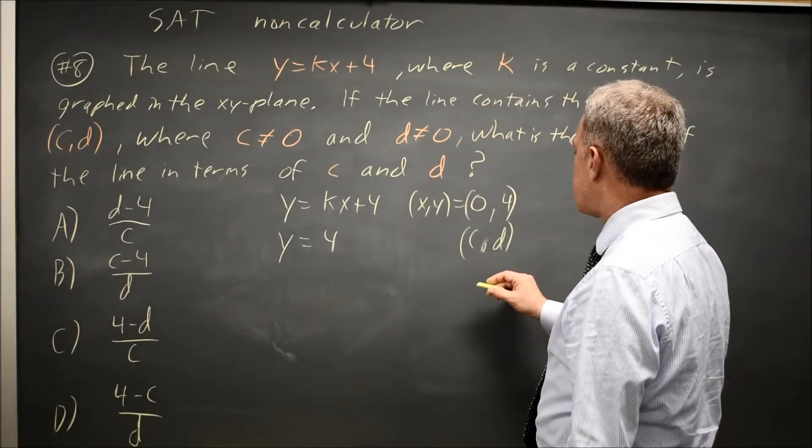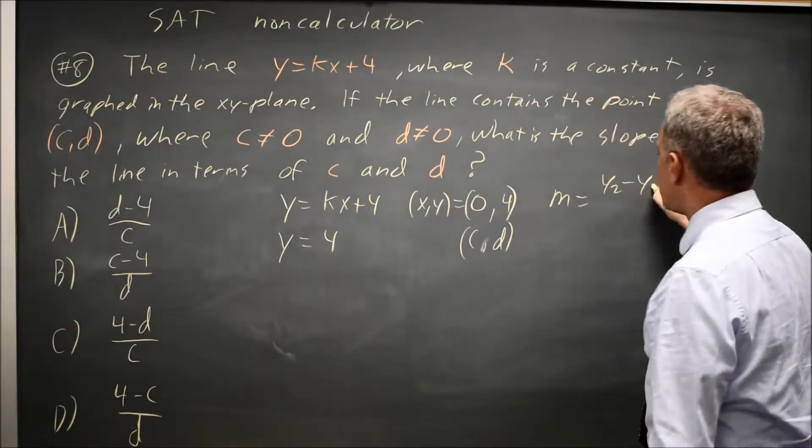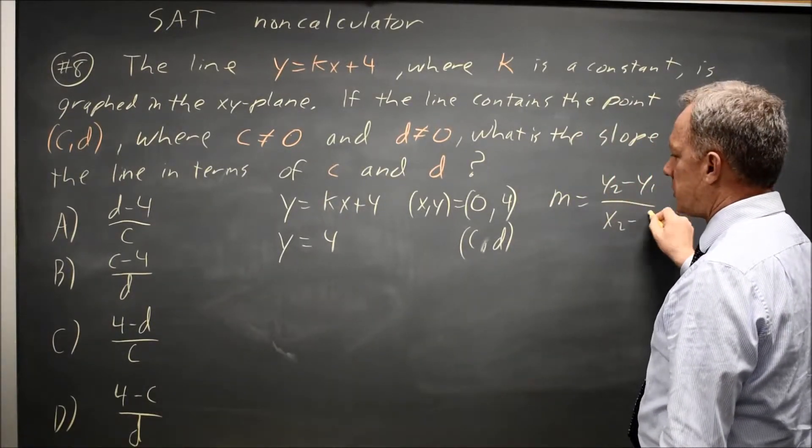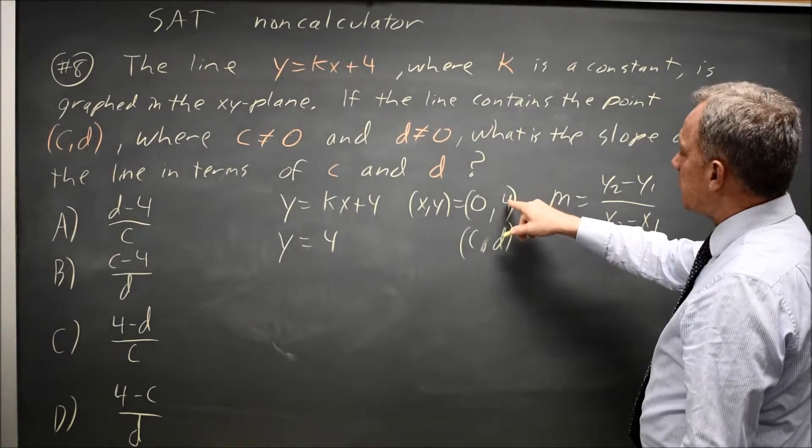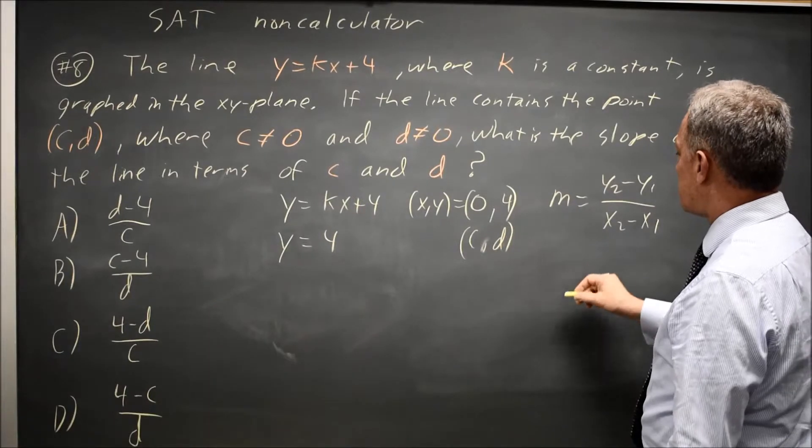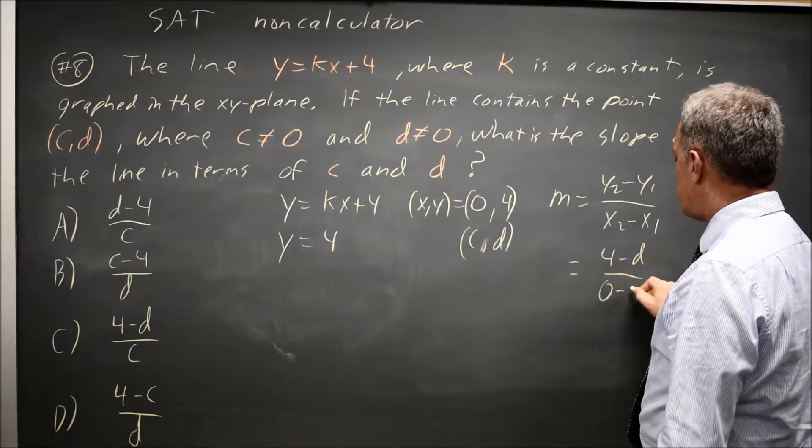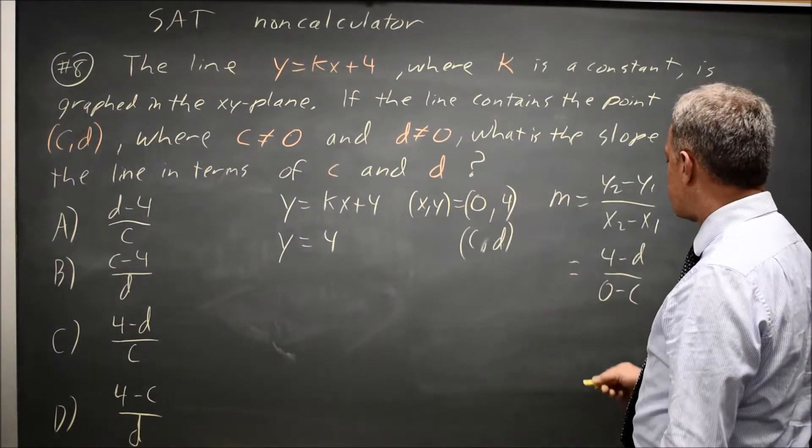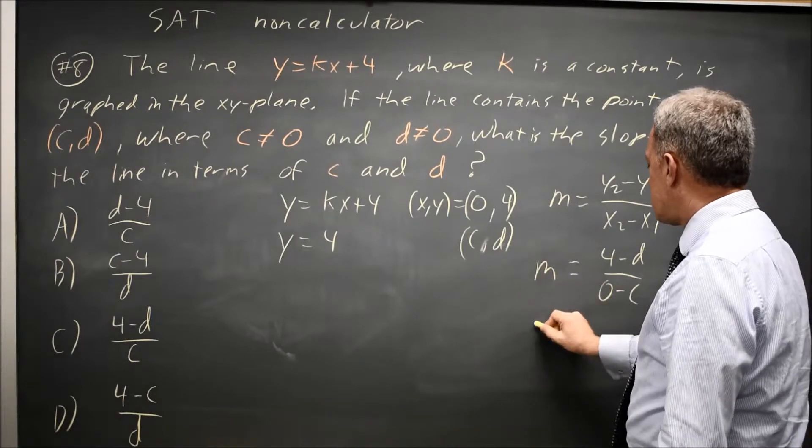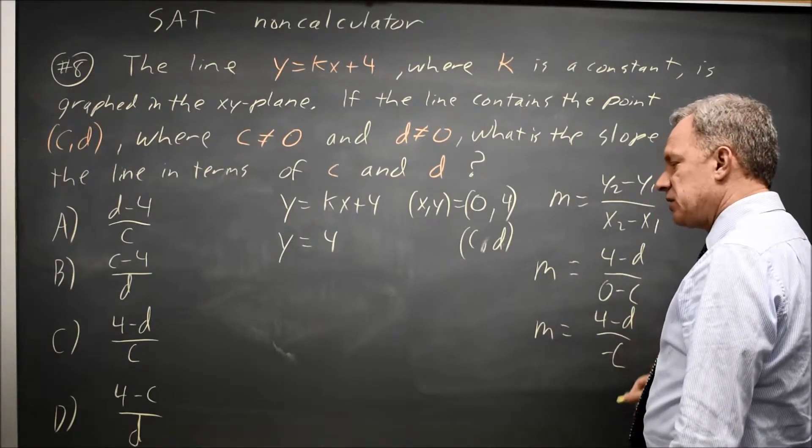Where k is actually the slope. So the slope is y2 minus y1 over x2 minus x1, and if I make this y2 and this y1, I get 4 minus d over 0 minus c. Since the 4 went first in the numerator, the 0 goes first in the denominator. So my slope is 4 minus d over negative c.